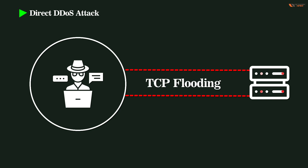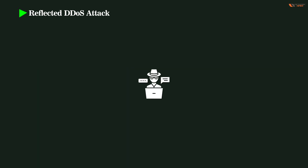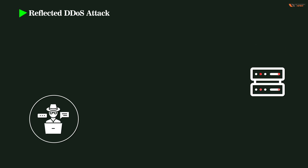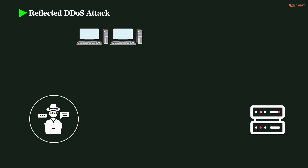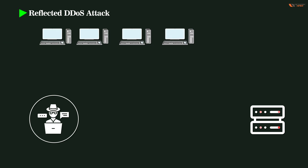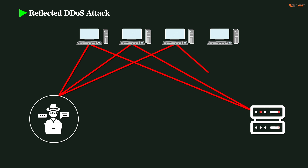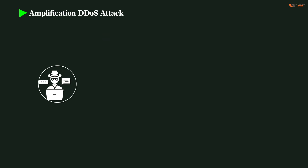Reflected DDoS attacks are another type of DDoS attack used by attackers, but they do not target the victim directly from the same subnet. Here, the attacker sends some kind of packet to a source — a third party that is completely oblivious to the fact that an attacker is using it. The response packet which that source sends out to the victim or web server is what achieves the denial of service.